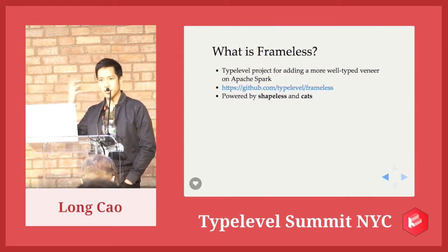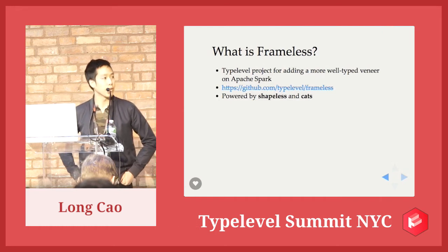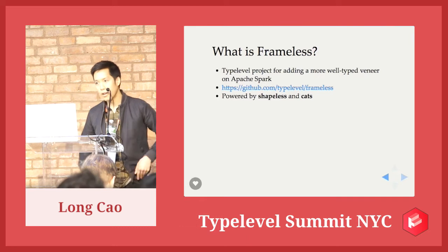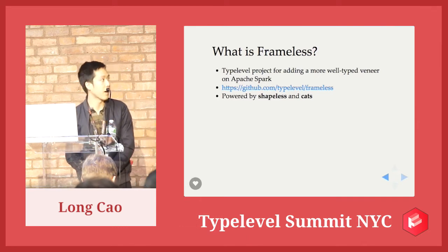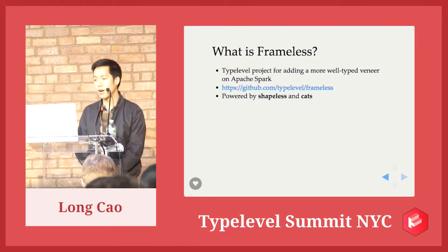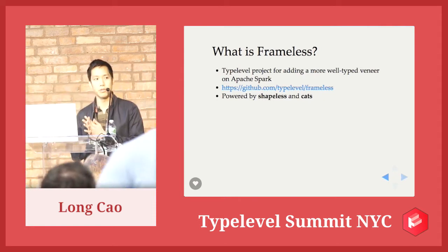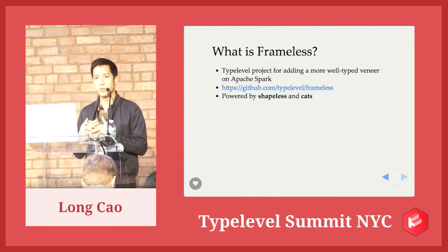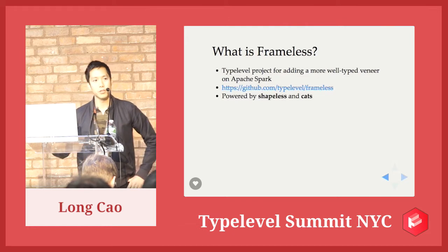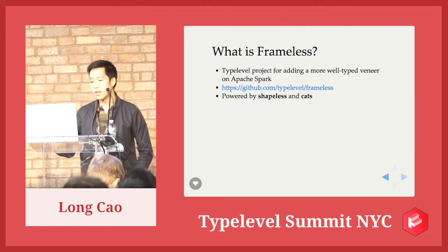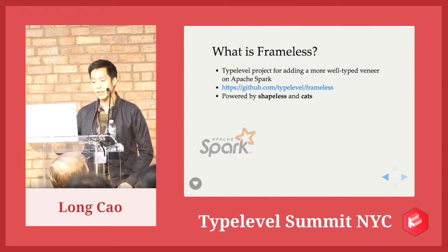So first of all, let's answer the question: what is Frameless? It's a project that's aiming to add a more well-typed veneer on Apache Spark. I'm sure most of you have heard what Apache Spark is — in my opinion it's like the killer app for Scala. A lot of people use it for data processing and streaming of all sorts. Frameless came about to try and solve some of those problems and make it more idiomatic and typeful. It's powered by Shapeless and Cats under the hood.